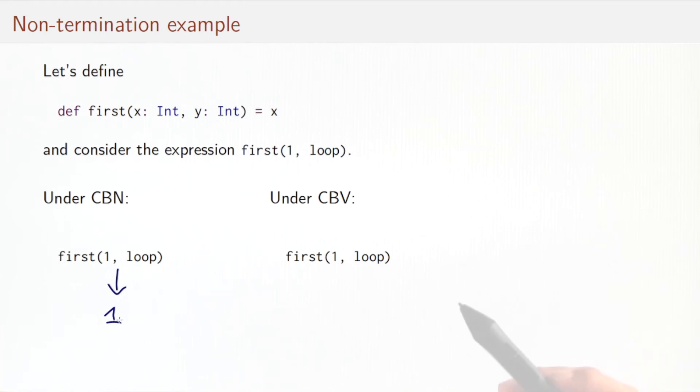Under call-by-value, we have to reduce the arguments to this expression. So we have to reduce loop. And we know that loop reduces to itself, so we would reduce the arguments infinitely often. The whole expression would always reduce to itself and we would make no progress. So that's another example of an infinite loop.